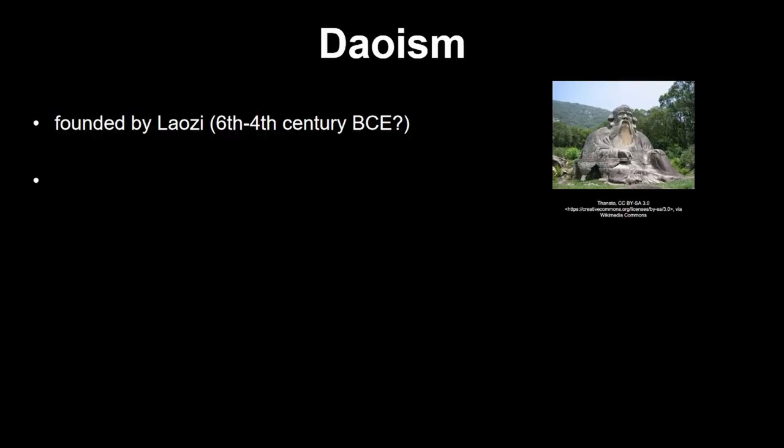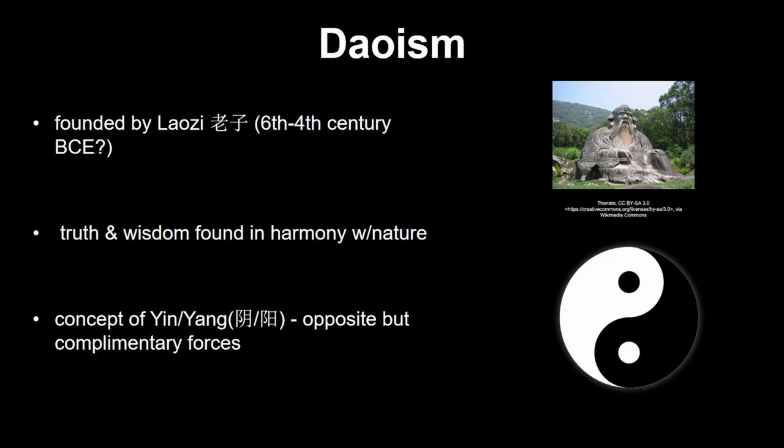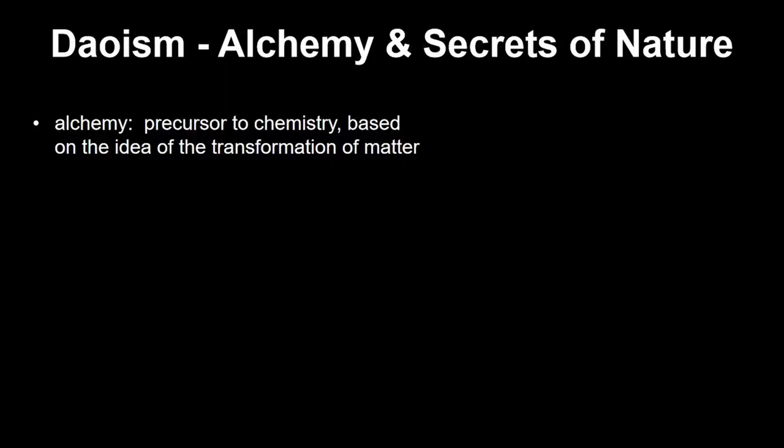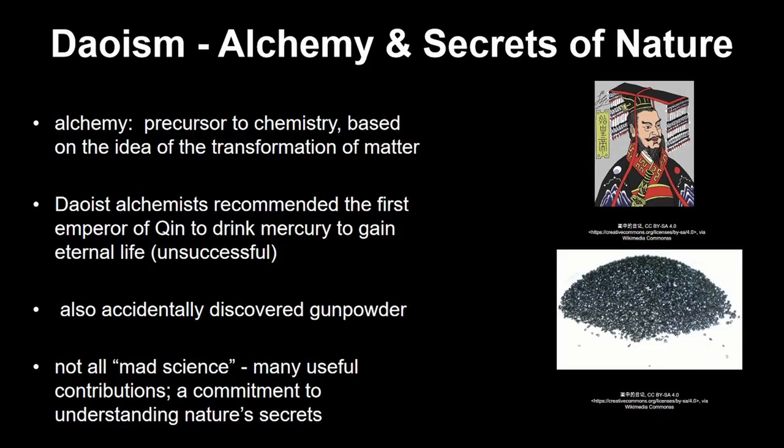During this time, Confucianism is not the only big belief system in China. Another cultural continuity in Song China is the persistence of both Daoism and Buddhism. Daoism was founded in China by Laozi around the same time as Confucius. It teaches that truth and wisdom can be found by seeking harmony with nature, as well as the concept of yin and yang — opposite but complementary forces. Daoists were avid alchemists who accidentally discovered gunpowder and were very interested in understanding the secrets of the natural world. Daoism also tended to have a more favorable view of women and held them in a more prominent position in society.